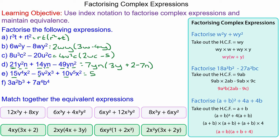For question e, the common factor of 15, 5 and 10 is 5. Of v to the power of 4, v squared and v to the power of 5 is v squared, and the common factor of x squared, x cubed and x squared is x squared. So 5 times 3 makes 15, v squared times v squared is v to the power of 4, and we already have the x squared. We need an x to make x cubed, and 2 times 5 is 10. V to the power of 3 times v squared gives v to the power of 5.